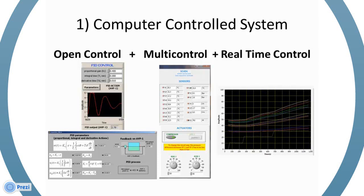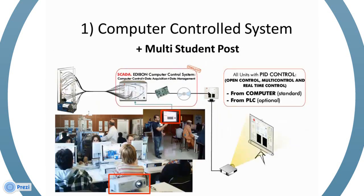We use real-time control because all of the information arriving to the computer from the unit throughout the interface are electronic signals that move very fast in nanoseconds. Multi-student post allows multiple students to work with a unit at one time. The system allows connection to an electronic whiteboard or projector visible to the entire class. The instructor can explain to the entire class at once, as well as compare the results of the students. Most importantly, you have computer control over the unit by using the electronic whiteboard.